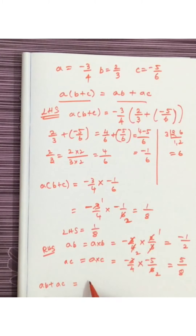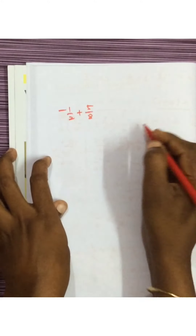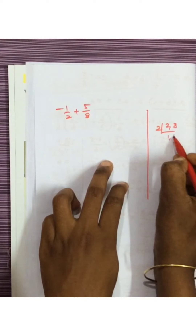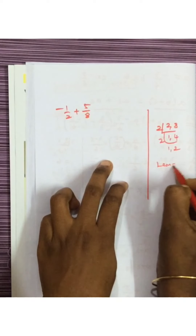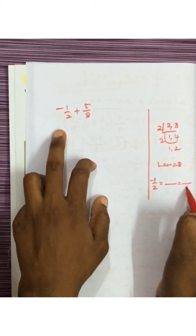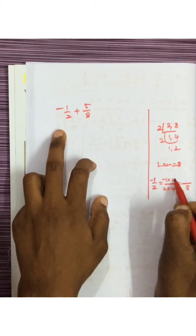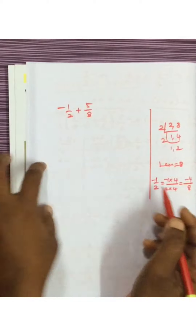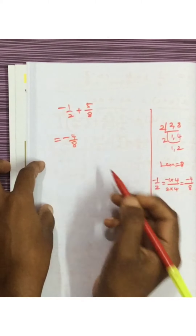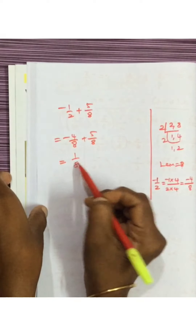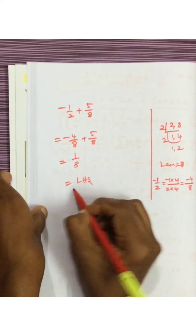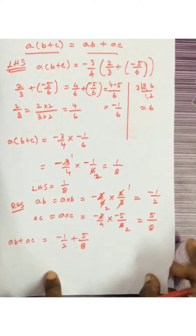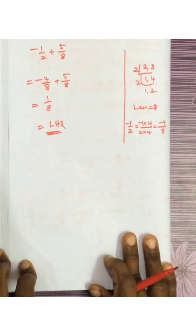Now we have to do AB plus AC. AB is minus 1 by 2 and AC is plus 5 by 8. Minus 1 by 2 plus 5 by 8 — taking LCM for 2 and 8, LCM is 8. Minus 1 by 2 can be written as minus 4 by 8. Minus 4 by 8 plus 5 by 8 equals 5 minus 4 equals 1 by 8. So that equals the left hand side. Left hand side gives 1 by 8 and right hand side also gives 1 by 8. Both are the same — we have proved the distributive property.